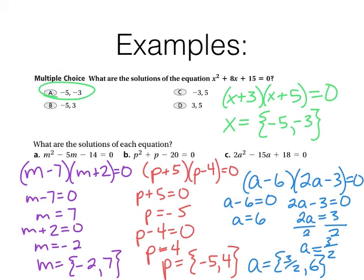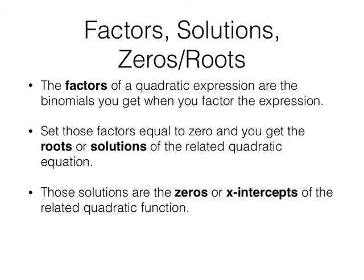Our final slide is a summary of all the vocabulary that goes with this. The factors of a quadratic expression are the binomials you get when you factor the expression. If you set those factors equal to zero, you get the roots or solutions of the related quadratic equation. Those solutions are the zeros or the x-intercepts of the related quadratic function. Roots, solutions, zeros, and x-intercepts will all be used interchangeably. Thanks, guys. I will see you in class.